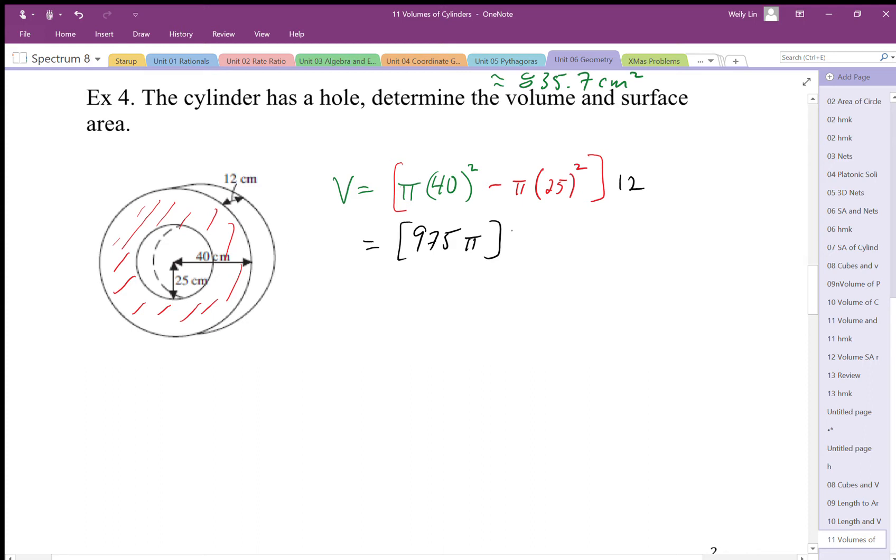That's the area of that surface times 12, the thickness, gives us volume. So we end up with, let's just double check that calculation, times that by 12. I get 11,700π and that's going to be cubic centimeters.